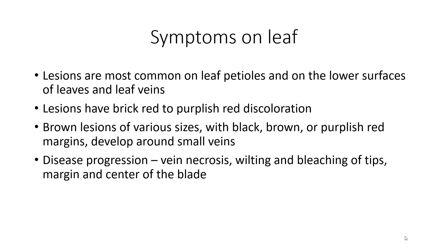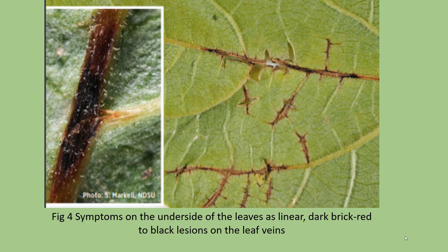During the advancement of the disease, vein necrosis occurs first, followed by wilting and bleaching of the tips, then it spreads to the margin and later on to the center of the blade. Figure 4 shows the symptoms on the underside of the leaves as linear dark brick-red to black lesions on leaf veins.